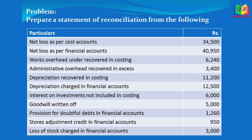The next item is interest on investment not included in costing — it is there in financial accounts only. Then goodwill written off, provision for doubtful debts in financial account, stores adjustment credit in financial account, and loss of stocks charged in financial account. In this problem the net loss as per cost account is given.